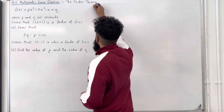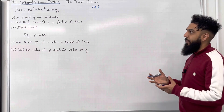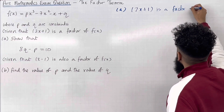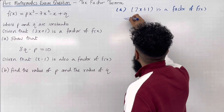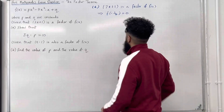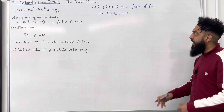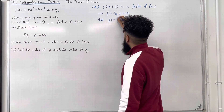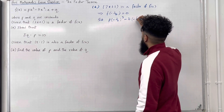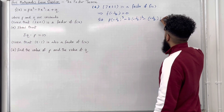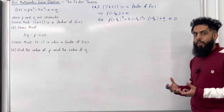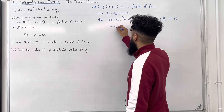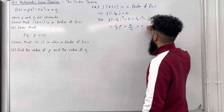Let's have a look at the solution to part a. We know that 2x plus 1 is a factor of f of x. This implies that f of minus a half is equal to 0, using the factor theorem. Now I can substitute x equal minus a half into the function f. So I get p times minus a half cubed minus 7 times minus a half squared minus minus a half plus q equals 0. Simplifying the equation gives minus 1 over 8p minus 5 over 4 plus q equals 0.